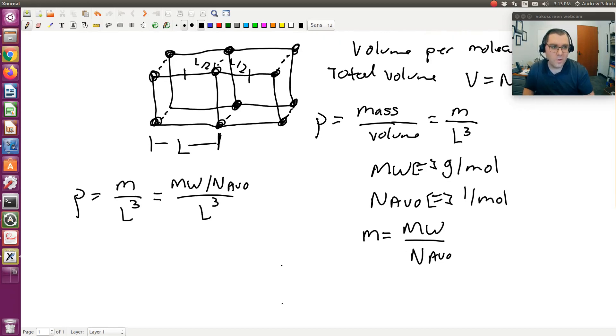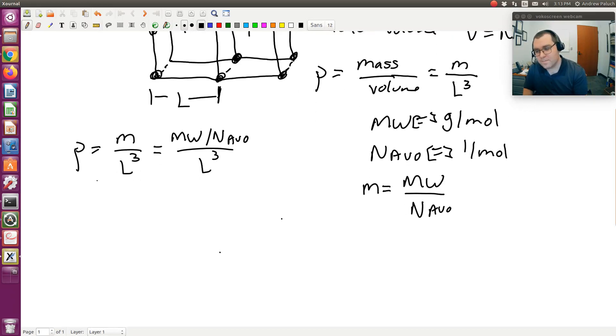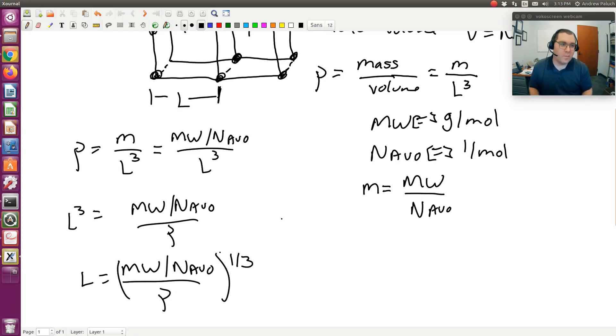So L is what I'm interested in. So L cubed will be molecular weight divided by N Avogadro over rho. So L is equal to molecular weight divided by N Avogadro over rho to the 1 third power.